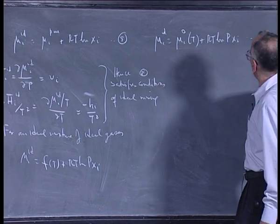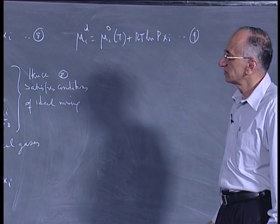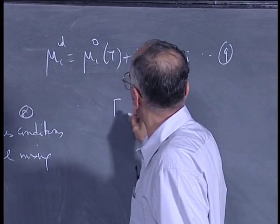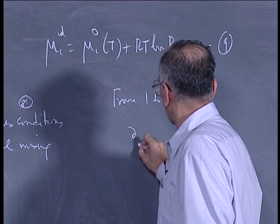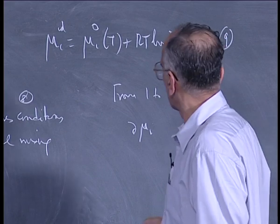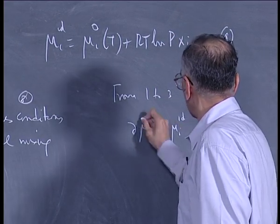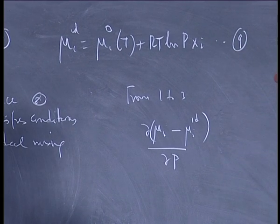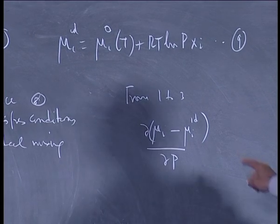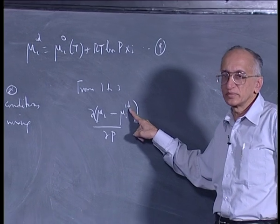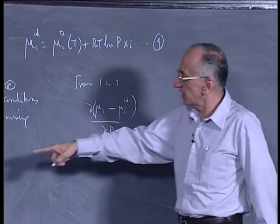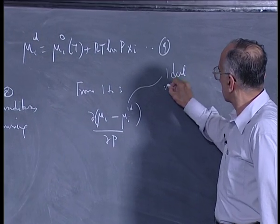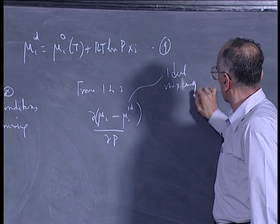From equations 1 to 3, I have delta of mu_i actual minus mu_i ideal by delta P. When I write ideal here, it only means ideal mixing. Where I have ideal mixing of ideal gases, I will write it explicitly. Normally when I write mu_i ideal, I only mean ideal mixing — that is, the gases need not be individually ideal, but I am assuming the process of mixing is ideal.